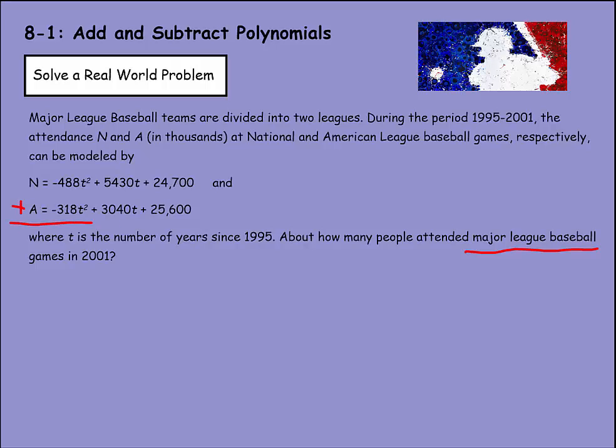And here it's all nicely lined up, up and down, so we can just kind of have a plus sign here and get our answer. We have -488 - 318. Together that's going to be -806t². We have +5430 and +3040. That would be a positive or +8,470t. And then these two numbers together, 24,700 and 25,600, gives me 50,300.